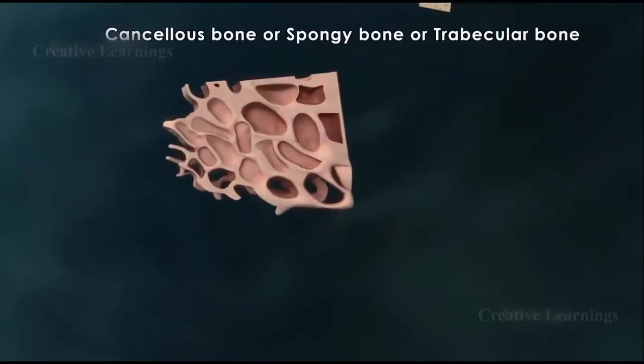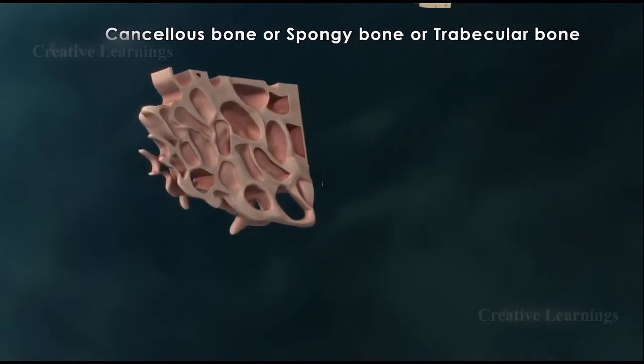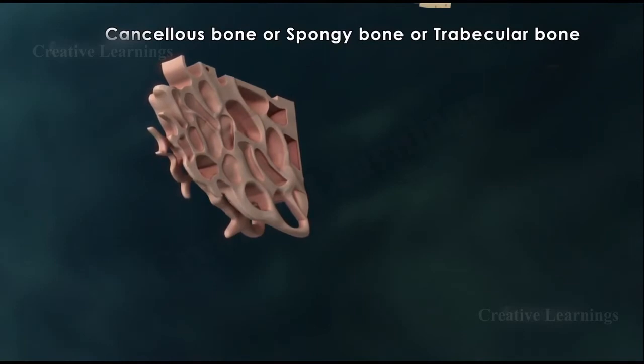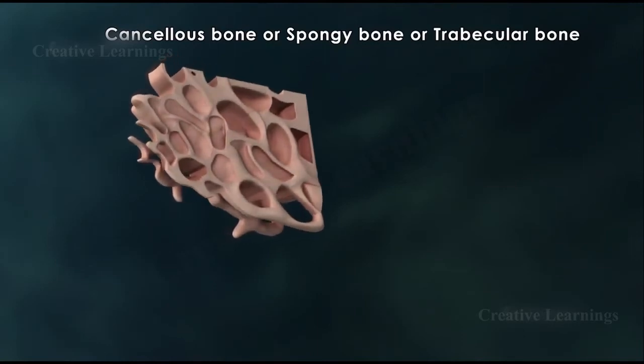Inside the compact bone is the cancellous bone, commonly referred to as spongy bone or trabecular bone.